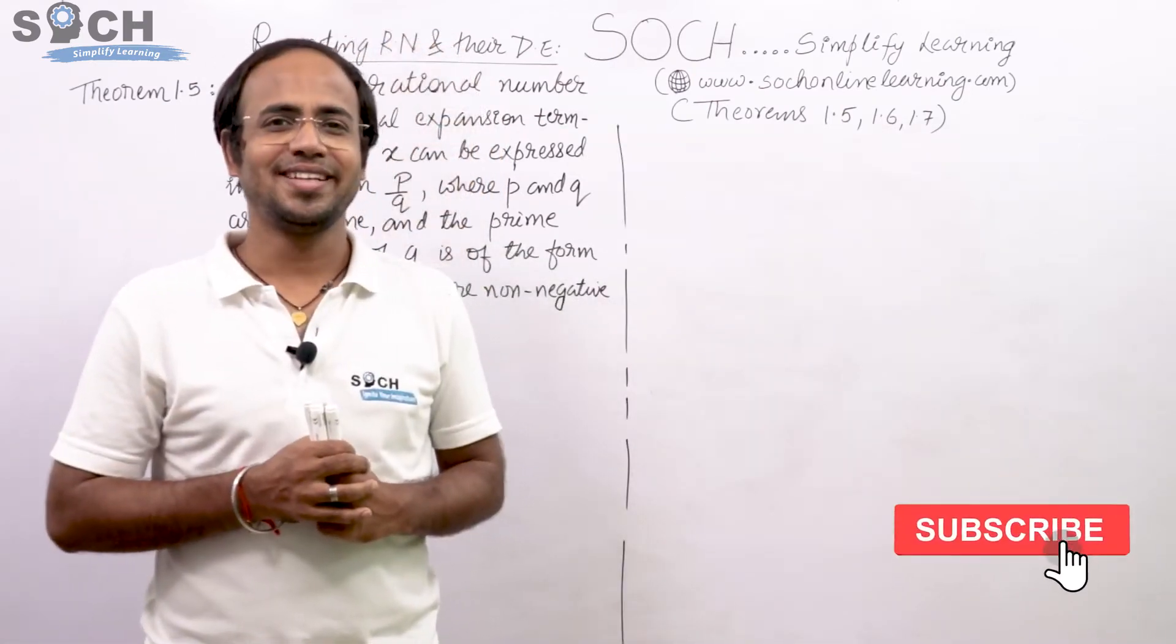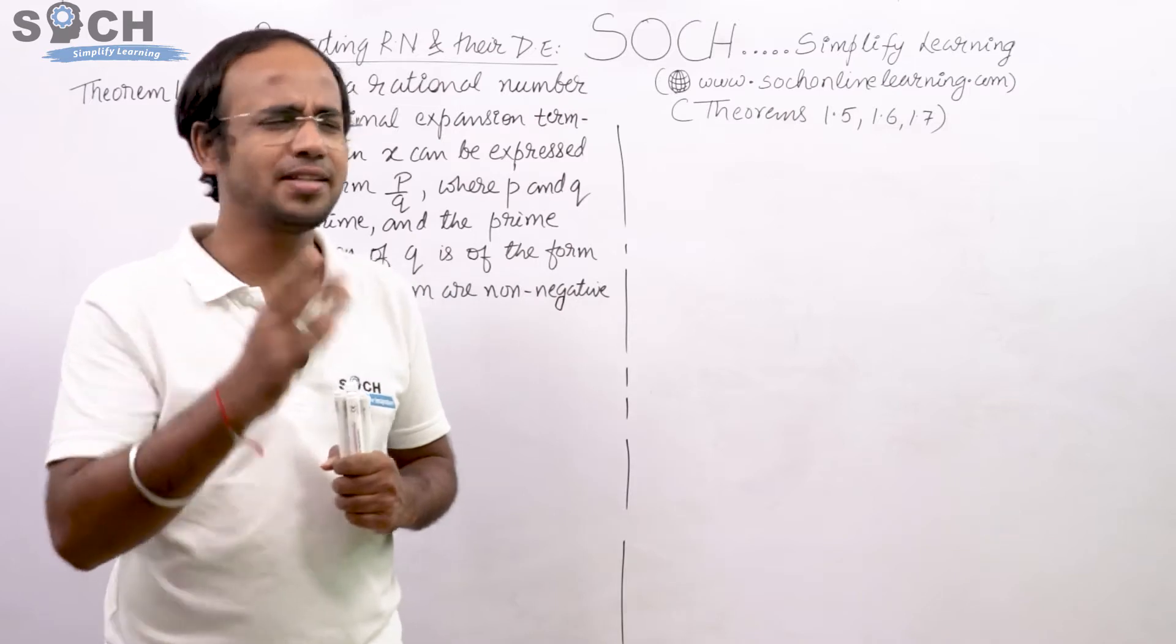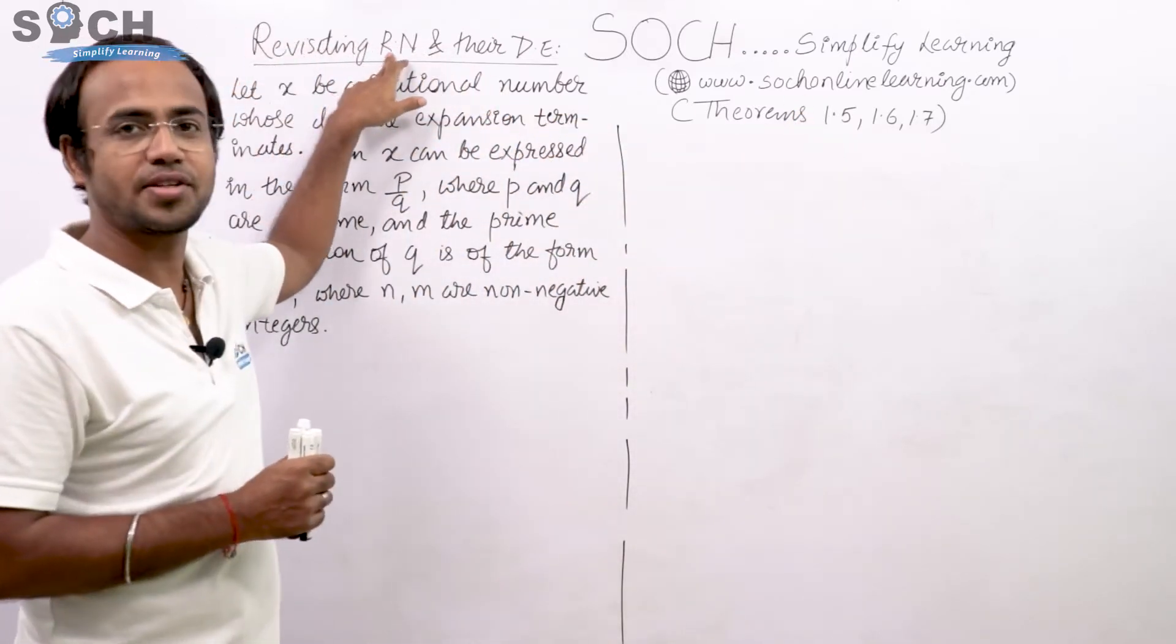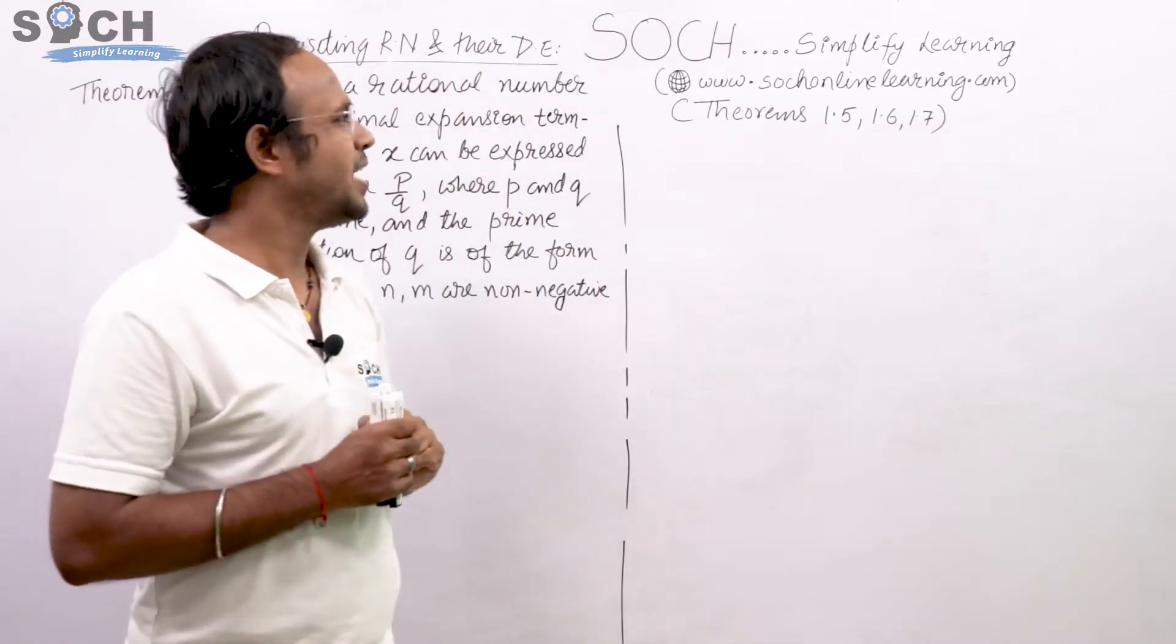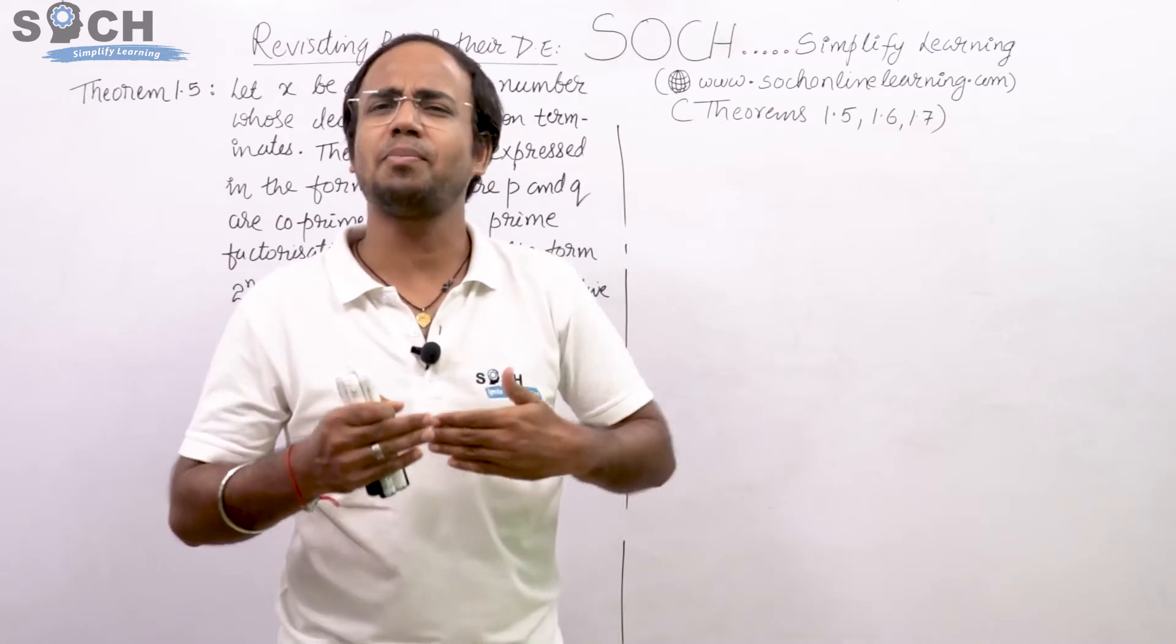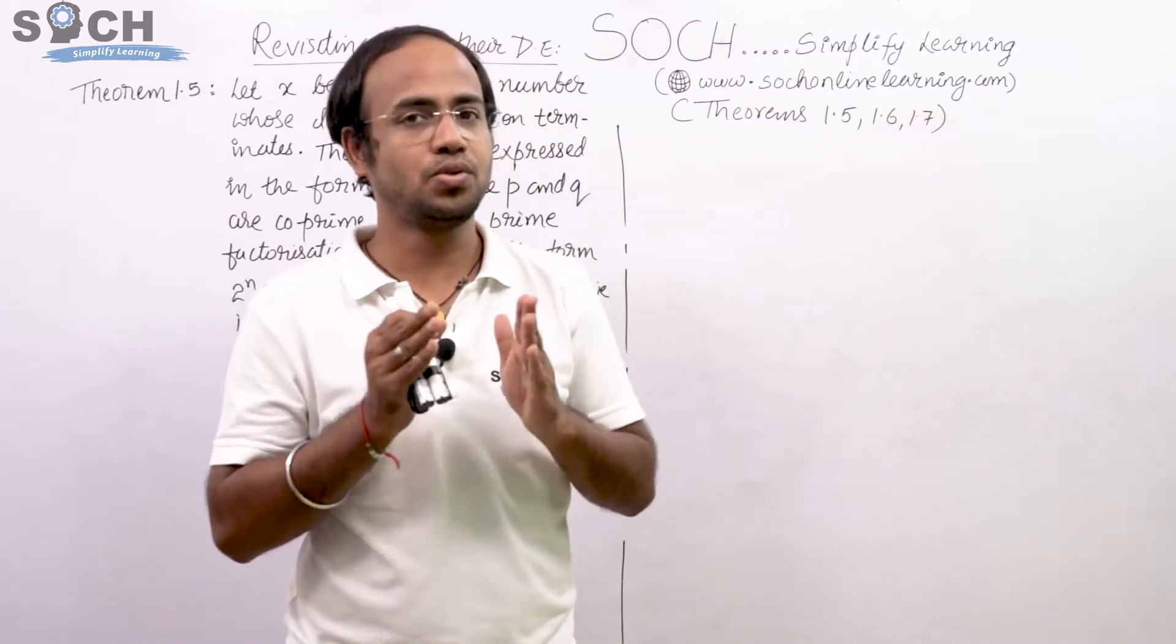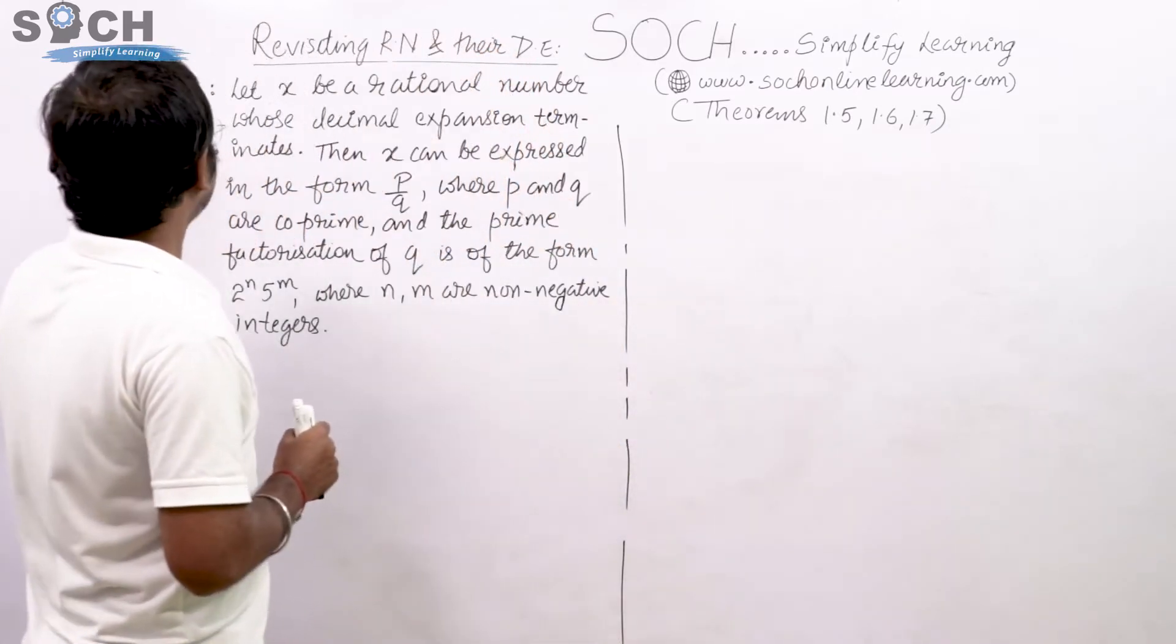Now my dear students, today's topic is very interesting. People find very difficulty in understanding these three theorems of Chapter 1 Real Numbers. And the three come under this topic revisiting R-N, R-N stands for rational numbers and their DE, that means decimal expansions.